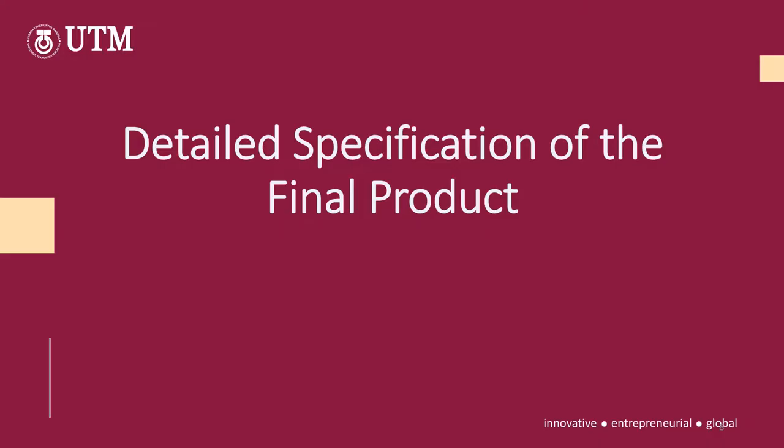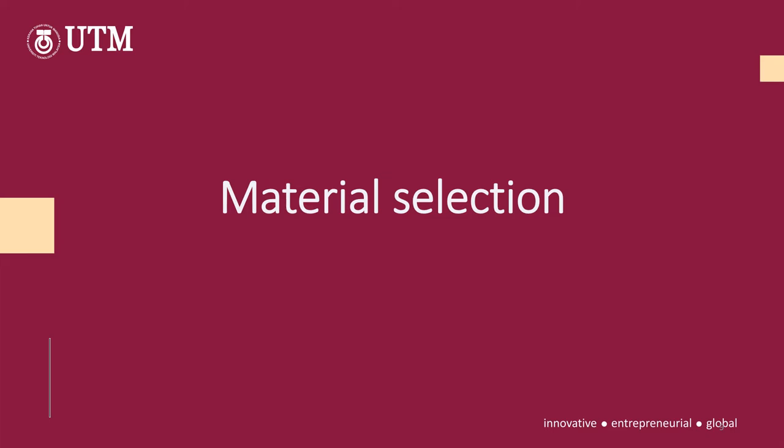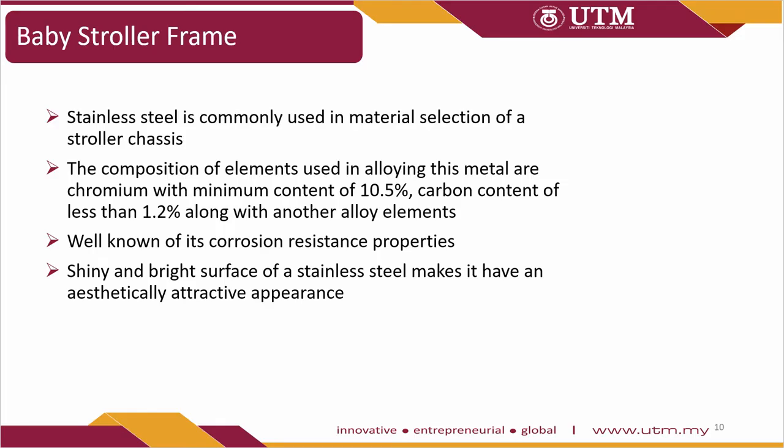For the detailed specification of the final product, regarding material selection for the baby stroller frame, stainless steel is commonly used for the stroller chassis. The composition of elements used in alloying this metal includes chromium with a minimum content of 10.5%, carbon content of less than 1.2%, along with other alloying elements. It is well known for its corrosion-resistant properties and aesthetically attractive shiny and bright surface.